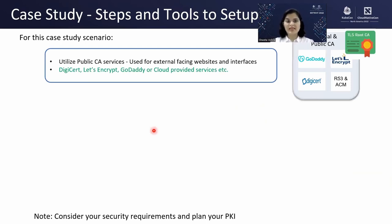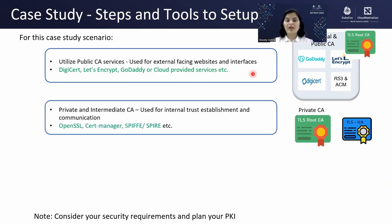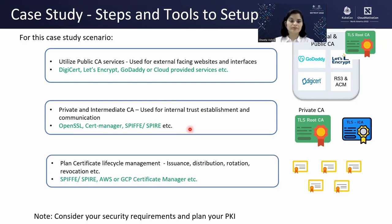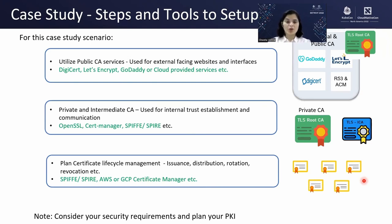To summarize the PKI setup: you have a public CA (like DigiCert or Let's Encrypt) for external-facing websites and interfaces. You have private and intermediate CAs using tools like OpenSSL, CertManager, and SPIFFE/SPIRE. And you have leaf certificates — the actual digital documents that provide security to your endpoints and systems.